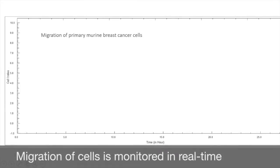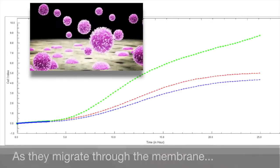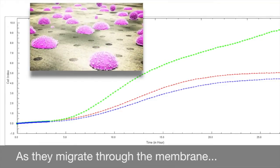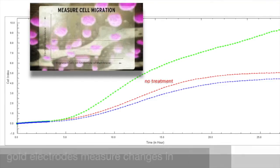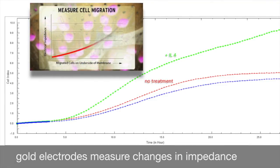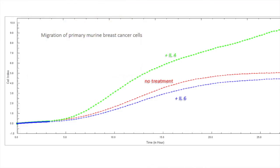Migration of the cells is monitored in real time. While cells migrate through the membrane, a very low alternating current is passed. The more cells attached to the electrodes at the bottom side of the membrane, the higher the impedance value that is detected by the instrument. You can easily follow the migration in real time.